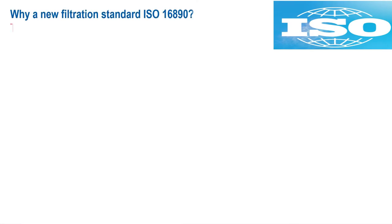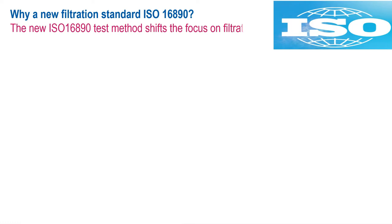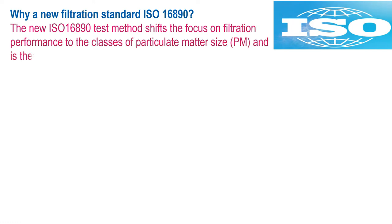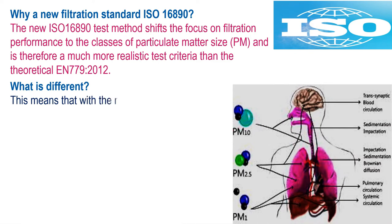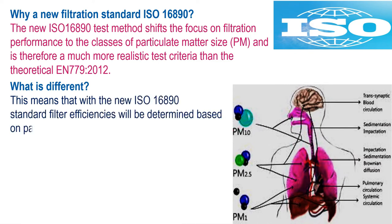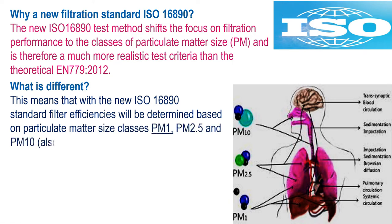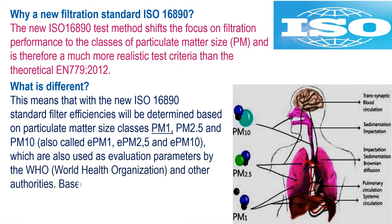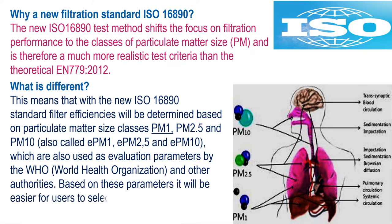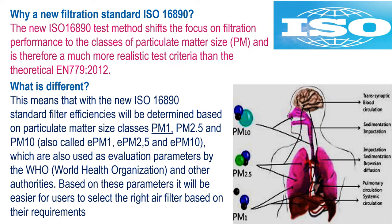Why a new filtration standard — ISO 16890? The new ISO 16890 test method shifts the focus on filtration performance to the classes of particulate matter size, and is therefore a much more realistic test criteria than the theoretical EN 779 2012. With the new ISO 16890 standard, filter efficiencies will be determined based on particulate matter size classes PM1, PM2.5, and PM10, also called EPM1, EPM2.5, and EPM10, which are also used as evaluation parameters by the World Health Organization and other authorities. Based on these parameters, it will be easier for users to select the right air filter based on their requirements.